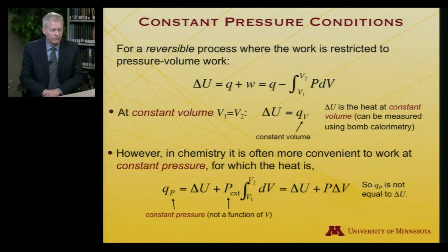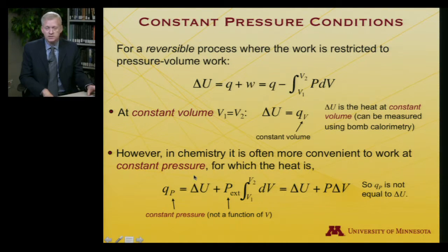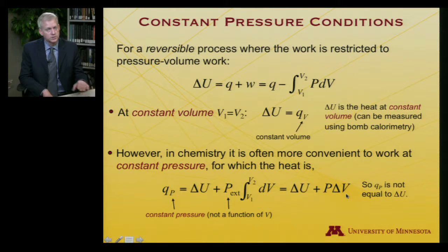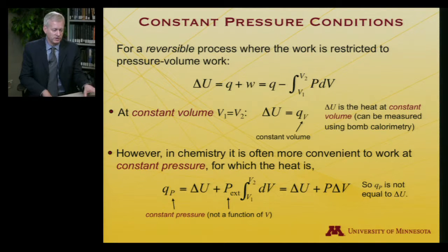It's more convenient to work at constant pressure sometimes. When that's the case, if it is indeed constant pressure, I'll rearrange the first law. The heat at constant pressure is going to be delta U plus P external — because I moved the work term to the other side, work is minus P external — times the integral from V1 to V2 of dV. At constant pressure I can pull P out from the integral, so I get that the heat at constant pressure is delta U plus P delta V. So QP, unlike QV, is not equal to delta U — there's also this P delta V term.